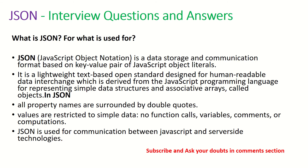The first question that is asked is: what is JSON and what is it used for? JSON stands for JavaScript Object Notation. It is a data storage and communication format based on key-value pairs of JavaScript object literals. It is a lightweight text-based open standard designed for human-readable data interchange. In JSON, all properties or names are surrounded by double quotes. Values are restricted to simple data — no function calls, no variables, no comments, and no computations.